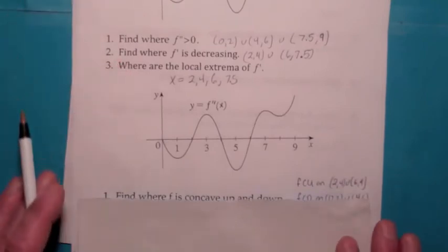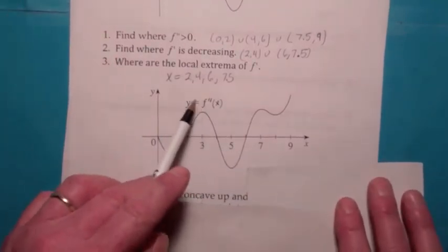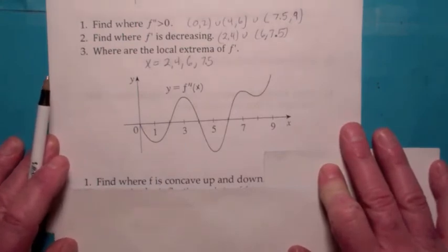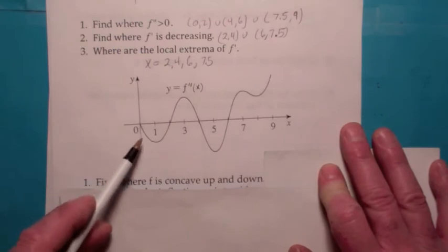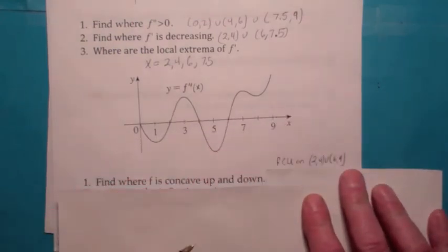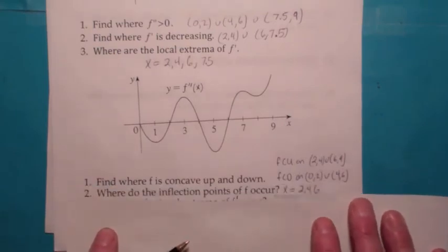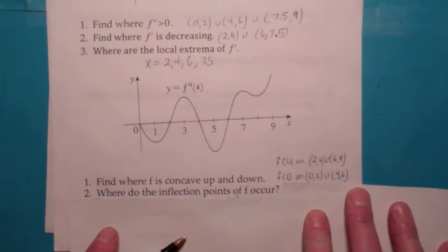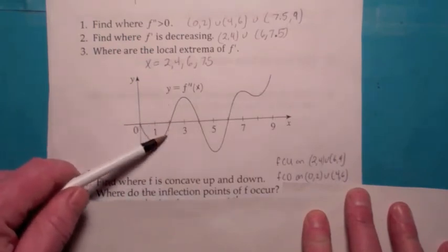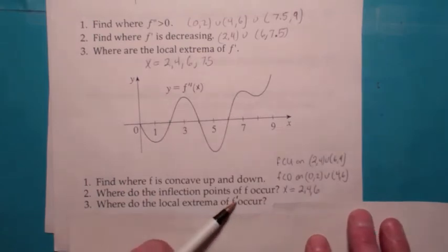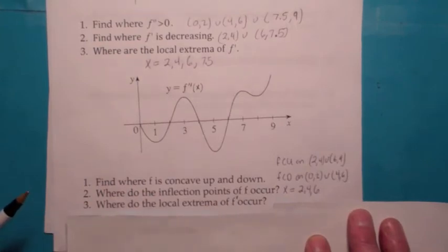Now I'm giving you the graph of f prime. Find where f is concave up and down. f is concave up whenever f prime is greater than zero — from two to four and from six to nine. f is concave down whenever f prime is less than zero — from zero to two and four to six. The inflection points of f occur where the concavity changes, at the x-intercepts: two, four, and six. The local extrema of f prime occur precisely at the inflection points of f — at two, four, and six.